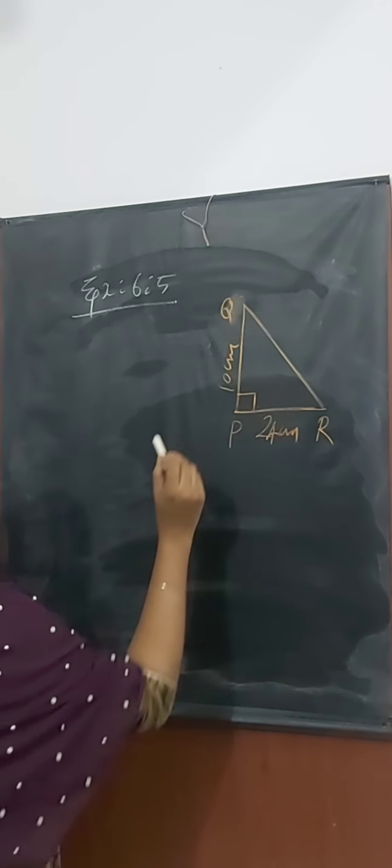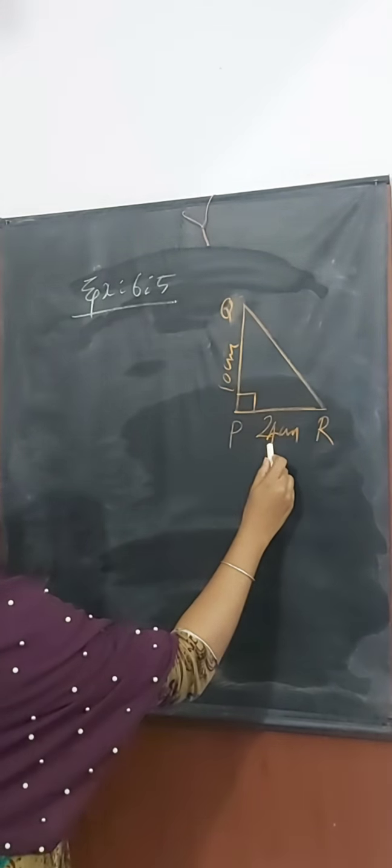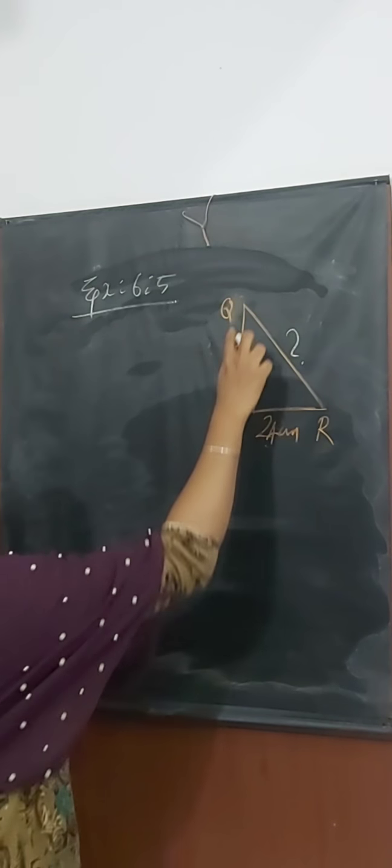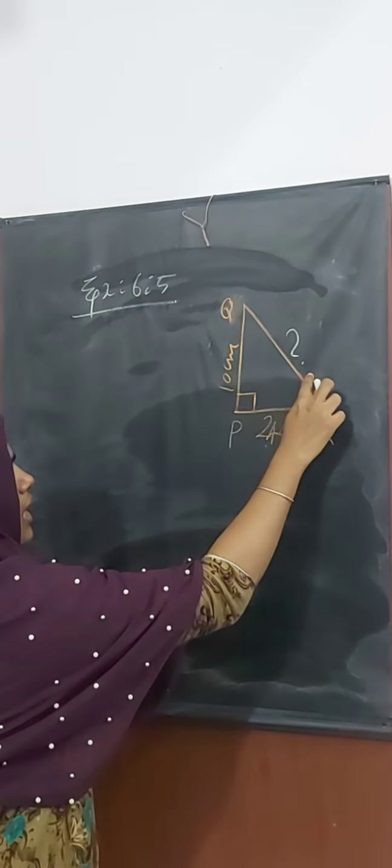Next, we discuss exercise number 6.5. First question: If PQR is a triangle right angled at P, if PQ equals 10 cm, PR equals 24 cm, find QR. Look at this figure. QR is the hypotenuse.